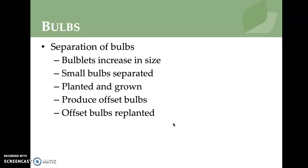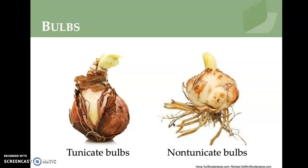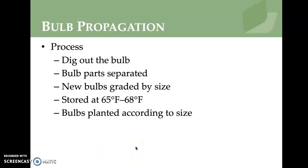Bulbs eventually produce offset bulbs that can be replanted. Tunicate bulbs have a dry outer bulb scale — examples include onion, garlic, daffodils, tulips, and amaryllis. Non-tunicate bulbs are scaly and do not have a dry covering, like a lily — they have separate scales attached to a basal plate. For bulb propagation, bulbs are dug out, separated, graded by size, stored at 65–68°F, and then planted according to size.